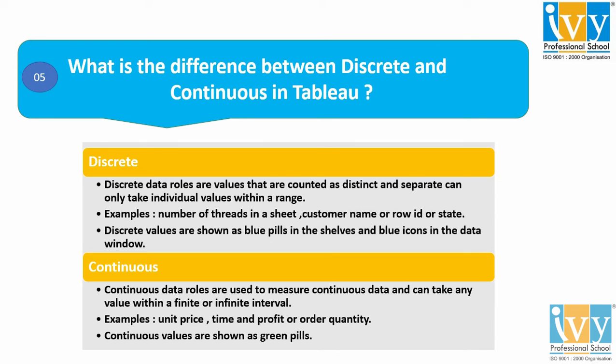For example, customer name, region, category, and subcategory — all these are examples of discrete. Discrete values are shown as blue pills in the shelves and as blue icons in the data window.